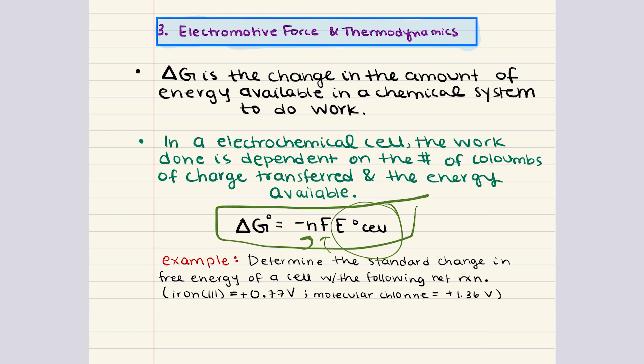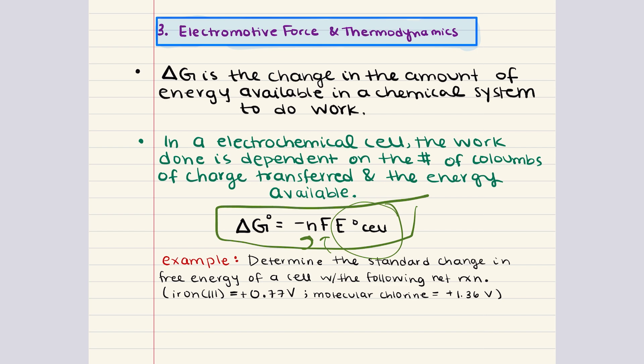Note the significance of the negative sign on the right side of the equation. Delta G and E cell will always have opposite signs. Therefore, galvanic cells have negative delta G and positive E cell values, and electrolytic cells have positive delta G and negative E cell values.